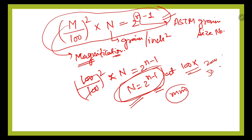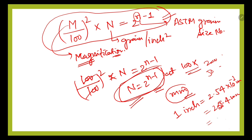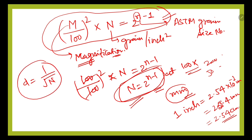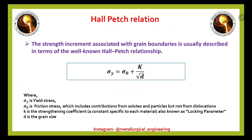We also need to keep in mind that if grain size is asked in mm, we use 1 inch equals 2.54 × 10⁻² meters, which is 25.4 mm. If asked in centimeters, we use 2.54 cm. There is also one more relation between grain diameter and grains per inch square: d is equal to 1 divided by the square root of N.